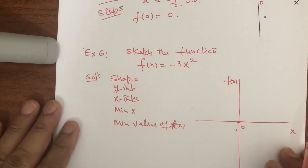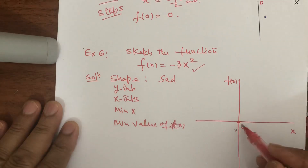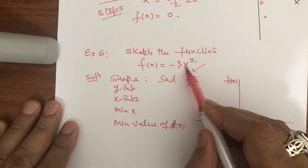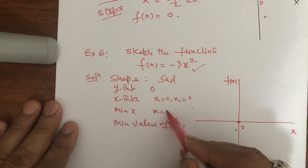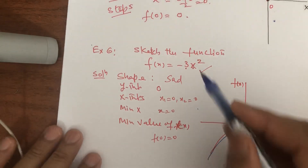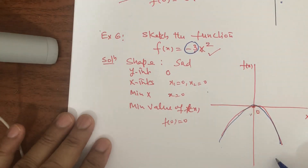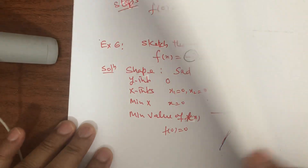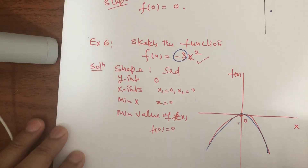And this one is for you for practice: because of this -3 with x², the shape should be sad. When it is sad, you will find x₁ = 0, x₂ = 0, minimum x = 0, y-intercept = 0, and minimum f(x) = 0 — all zeros. The shape will be like this. With the same information, here the shape was happy because of +2, and here the shape is sad because of -3. There are many problems in the practice set also — please practice and redo this video. I have plotted 6 functions. Do it again 2 or 3 times. Inshallah khair. Thank you very much.